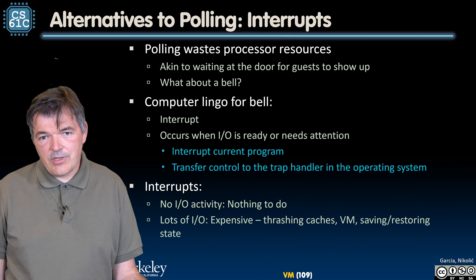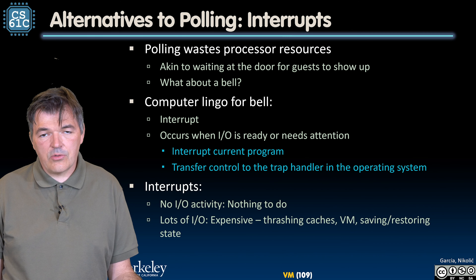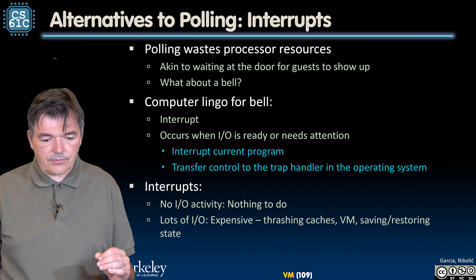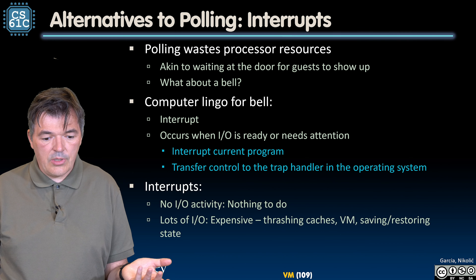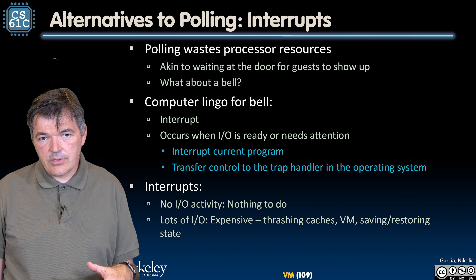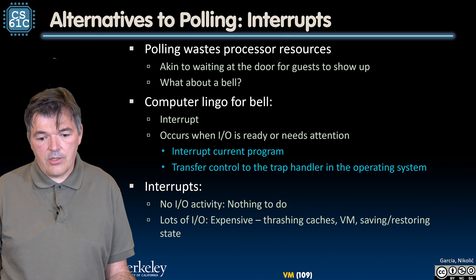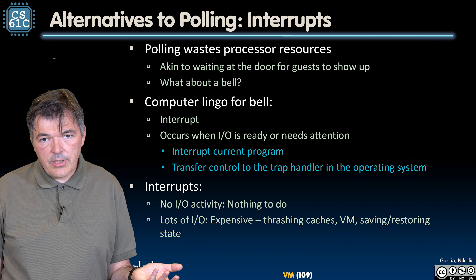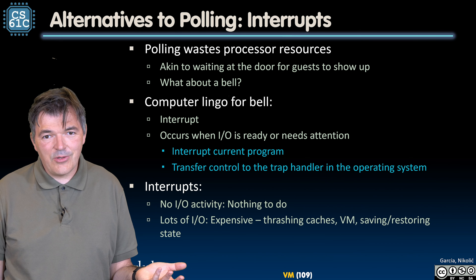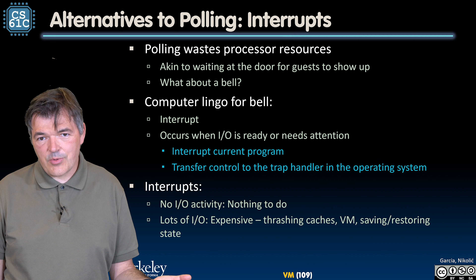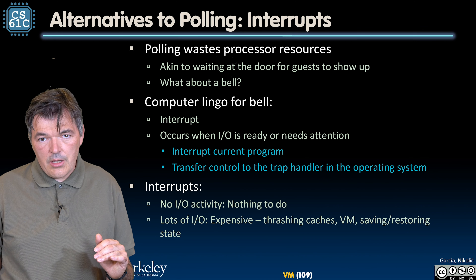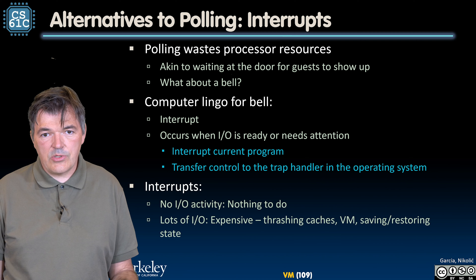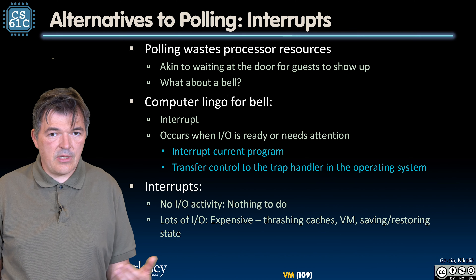The device will raise an interrupt whenever it has data to deliver or an event to report. This interrupt interrupts the current program and transfers control to the trap handler in the operating system to handle it. Why are interrupts better than polling? Because when nothing is happening — no news from the I/O device — our regular program continues uninterrupted. If the device doesn't have much activity, we simply receive these interrupts periodically and handle them accordingly.